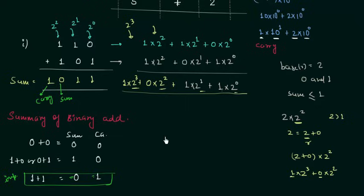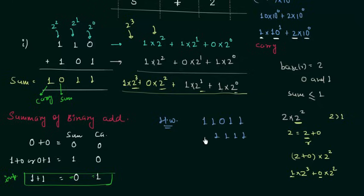This is all for binary addition. Now we will move to the homework problem. The first number is 11011 and the second number is 1111. Once you have your answer, post it in the comment section. This is all for this presentation — if you have any doubt regarding any part of this lecture, please ask in the comment section.